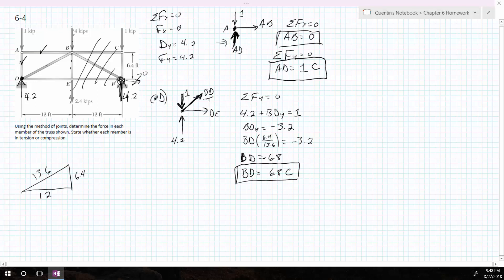So now I just figured out this value right here. And so what's my next equation? I'm going to take my sum of forces in X equals 0. So that's going to tell me that BD in the X plus DE equals 0.